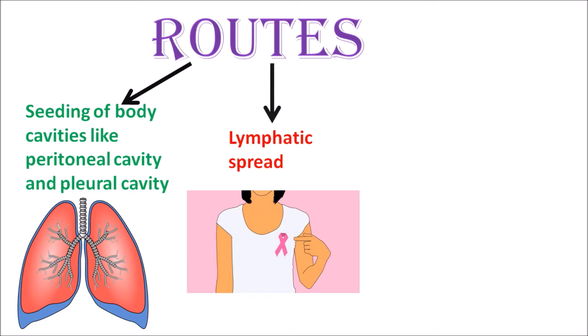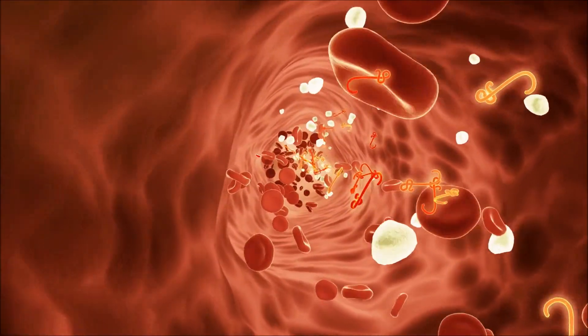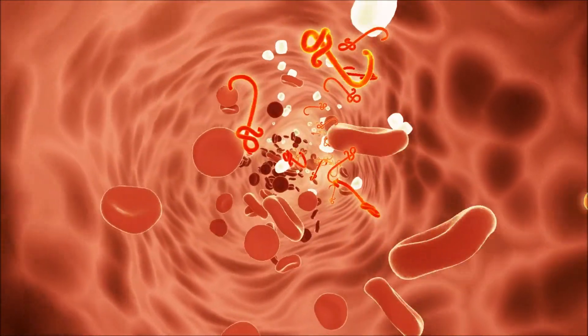The next route to be discussed is hematogenous spread. As the name suggests, it is basically spreading through the blood vessels. If there is any type of carcinoma or sarcoma in the body, it can very easily spread via the blood to organs that are highly perfused. For example, the liver, the kidney, and the lungs receive a tremendously high amount of blood compared to other organs, so tumors tend to spread to these organs the most.